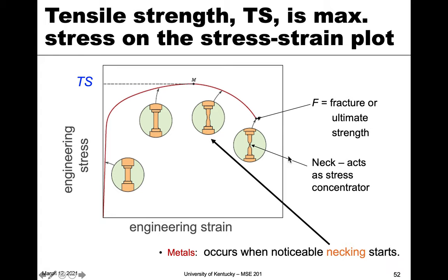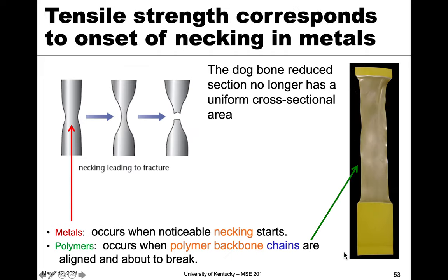So the tensile strength denotes where noticeable necking occurs, and this is for metals. When you have this point, it means necking is occurring. The interesting thing is that necking in metals corresponds to the onset at the tensile strength — it's this localized difference in cross-sectional area, so it's no longer uniform.